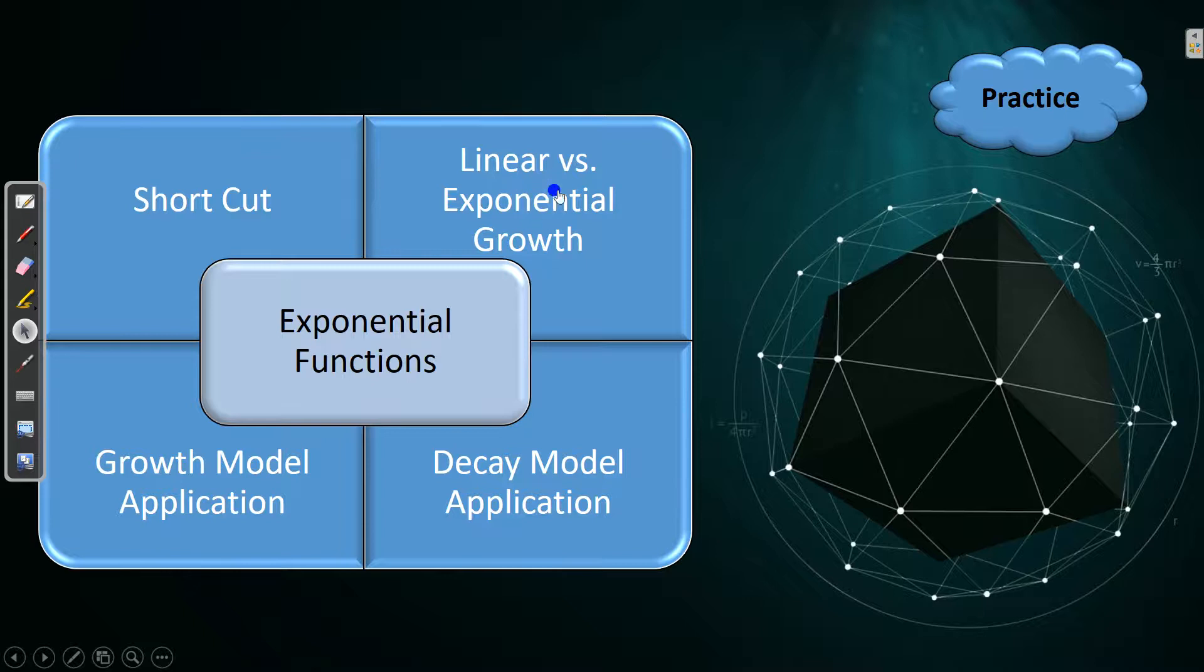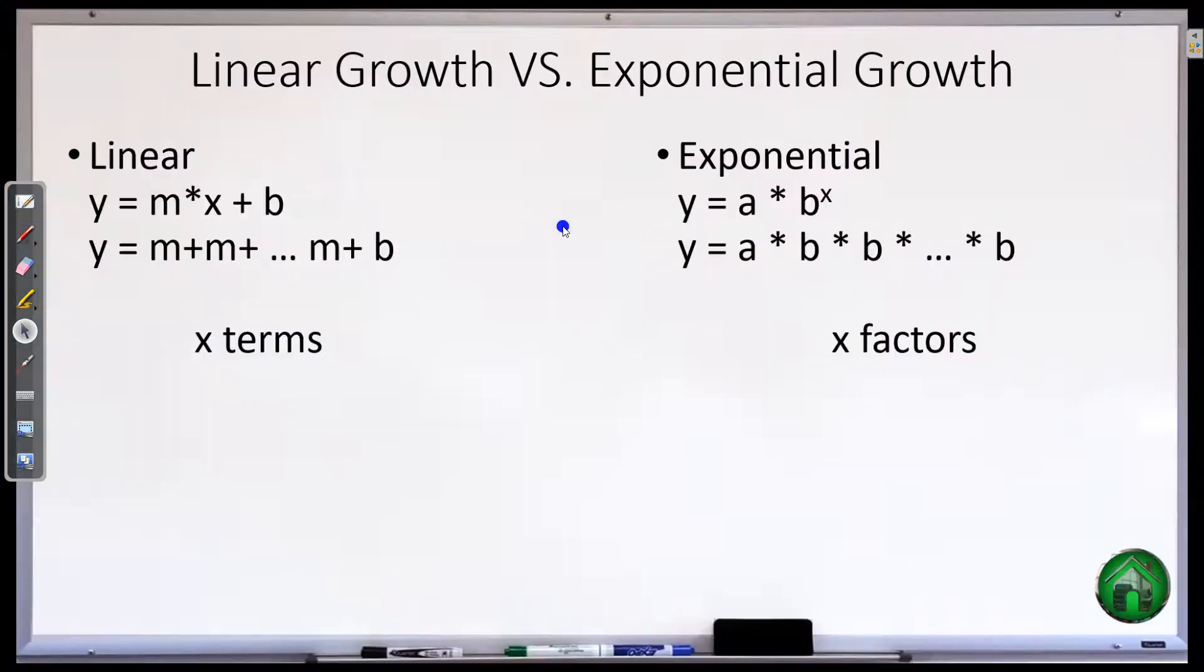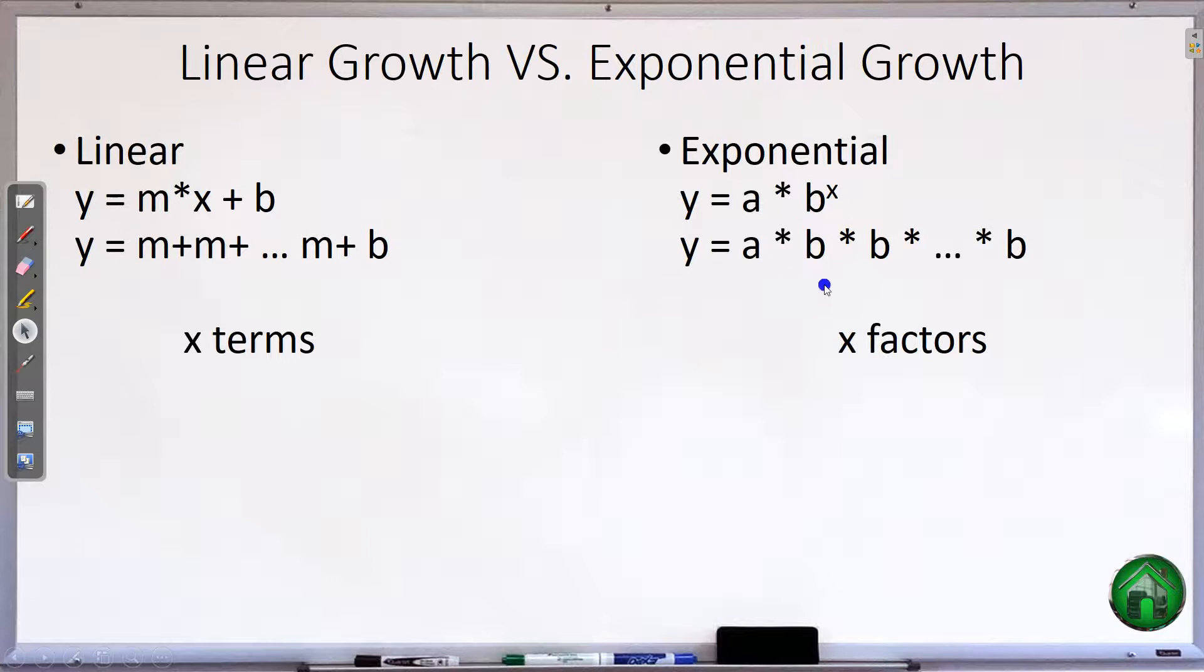So we're going to first take a quick summary look at linear versus exponential growth and that equation that we just did. So when you're doing a linear growth, a straight line, you are adding something every time. You're going over 1 and then up 2, over 1, up 2. Every time you're adding the slope over and over again. Like you're making $10 an hour. Every hour you get another $10. 10 plus 10 plus 10 plus 10. That's linear.